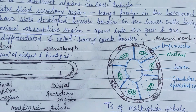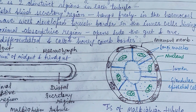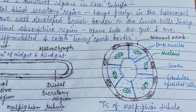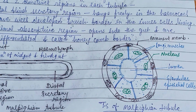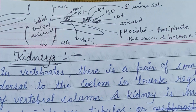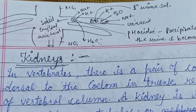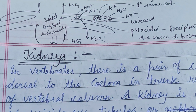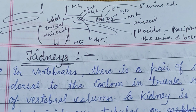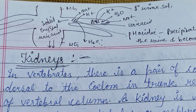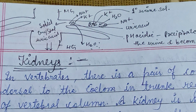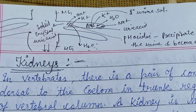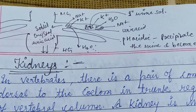As we discussed, the Malpighian tubules are arranged in six groups and hang freely in the haemocoel. Here is a rough sketch describing the location of the Malpighian tubule — it hangs freely in the haemocoel and is found between the midgut and the hindgut.